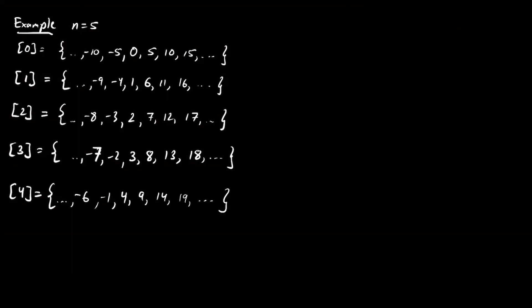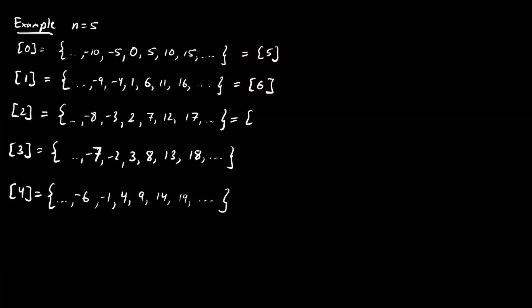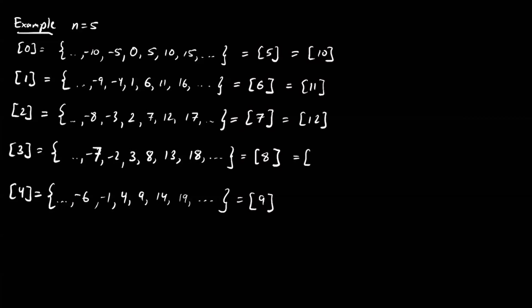I can continue in this way and produce all of my equivalence classes. We've produced the equivalence class of 0 and the equivalence class of 1. I can similarly produce the equivalence classes of 2, 3, and 4. Then I notice that 5 is in the equivalence class of 0, so the equivalence class of 5 is the same as the equivalence class of 0. Likewise, 6 is in the class of 1, 7 is in the class of 2, 8 is in the class of 3, and 9 is in the class of 4. This cycling continues, and we can only produce five unique equivalence classes.